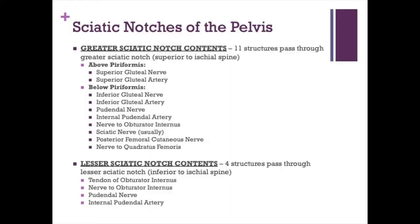Next we talk about the sciatic notches of the pelvis — both the greater and the lesser. There are 11 structures that pass through the greater sciatic notch, which is the area superior to the ischial spine. The lesser sciatic notch is inferior to the ischial spine and typically has four structures, many of which came out through the greater sciatic notch and then re-enter the pelvis through the lesser.